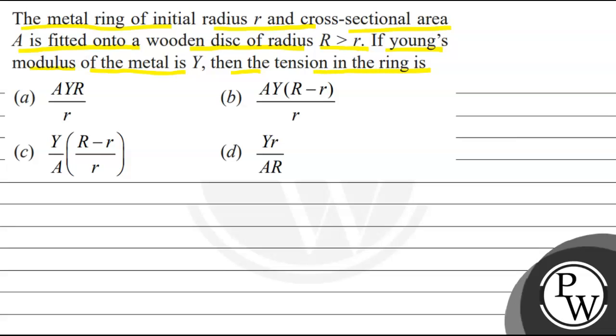If Young's modulus of the metal is Y, then the tension in the ring is: Options are (a) AYR upon r, (b) AY(R-r) upon r, (c) Y/A times (R-r) upon r, (d) Yr upon AR. We have to choose the correct option.